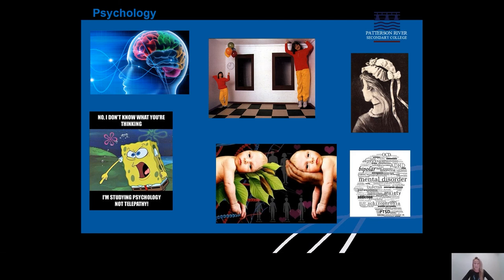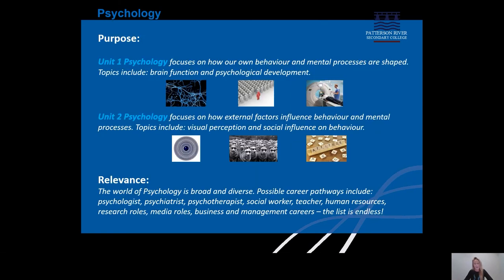Unit 1 Psychology focuses on how our own behaviour and mental processes are shaped. Topics include the structure and function of the brain, the nervous system, the role of neurons, psychological development, mental illness and research methods, just to name a few. Unit 2 Psychology focuses on how external factors influence behaviour and mental processes. Some of the topics include visual perception, the structure and function of the eye, visual illusions, social influence on behaviour, and research methods. Unit 2 also delves heavily into a lot of famous experiments that we analyse.